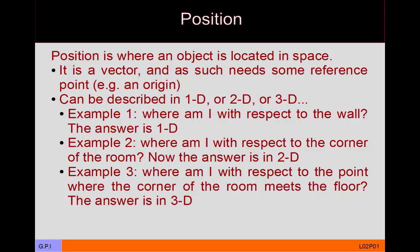Usually you specify east-west first and then north-south second. For 3D, you choose the location where the west wall, south wall, and floor meet as the origin. Then you specify east-west, north-south, and up-down. For example, if the object is 2 meters east of the west wall, 3 meters north of the south wall, and 4 meters above the ground, the position is (+2, +3, +4).